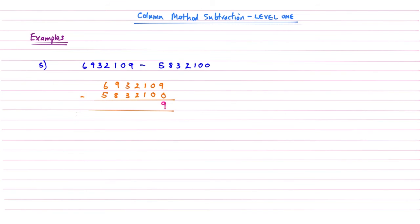Second column, 0 take away 0, well that's 0. 1 subtract 1, well that's nothing. 2 subtract 2 is nothing. 3 subtract 3 is nothing. 9 subtract 8 is 1. Then the millions column, 6 subtract 5 is 1. So my answer is going to be 1 million 100,009. That just goes to show that column method subtraction works with massive numbers as well as tiny numbers.